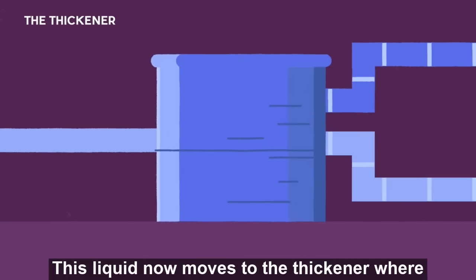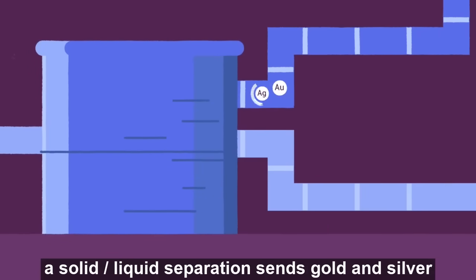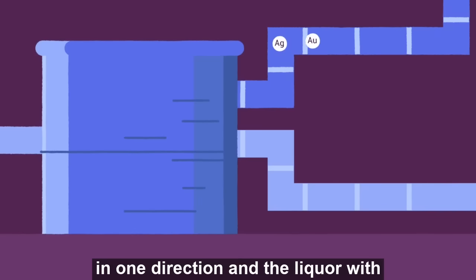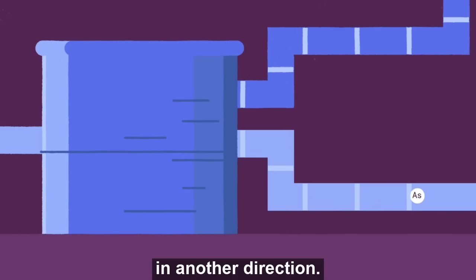This liquid now moves to the thickener where a solid liquid separation sends gold and silver in one direction and the liquor with iron, arsenic, and any soluble base metals in another direction.